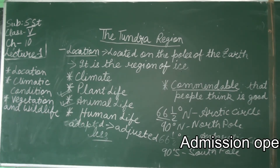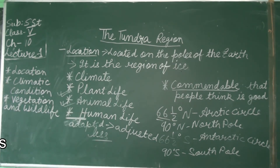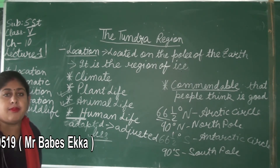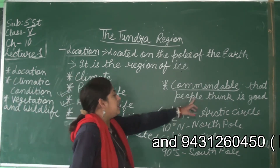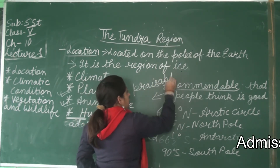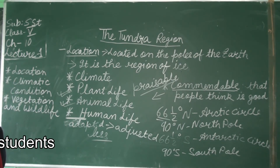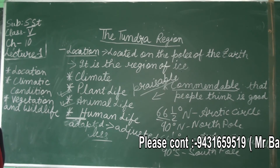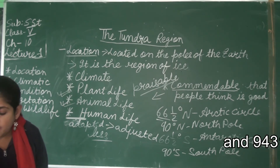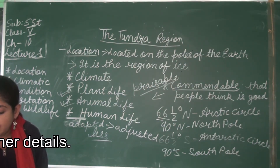The last topic is human life. Like plants and animals, the story of human survival in the Tundra region is also commendable — meaning praiseworthy. The total human population of the whole Tundra region is not more than 1 lakh, comprising mainly the Eskimos of North America, the Lapps of Scandinavia, the Samoyeds of Siberia, the Yakuts of the Lena Basin, and the Koryaks and Chukchi of the former USSR.